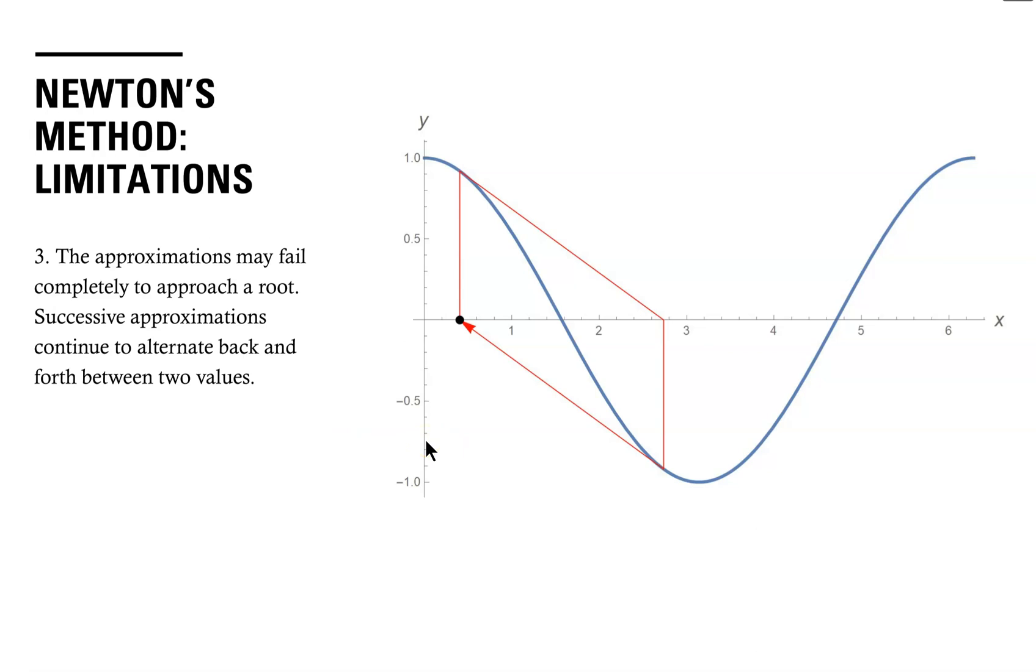So in this diagram, if we start with an initial approximation of x0 and find the x-intercept or the root of the tangent line, we'll end up over here almost to 3, and we'll find x1.